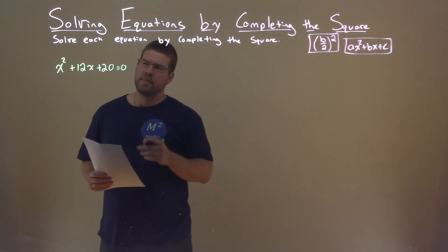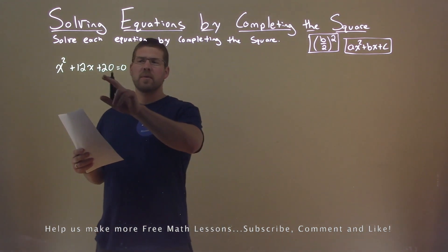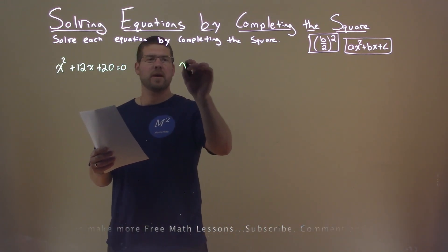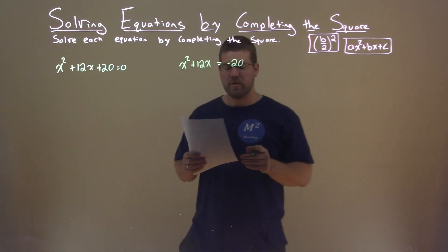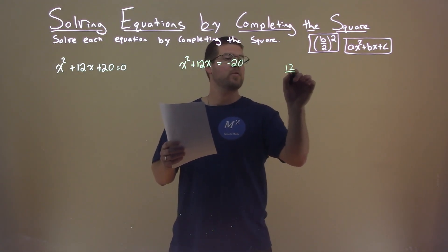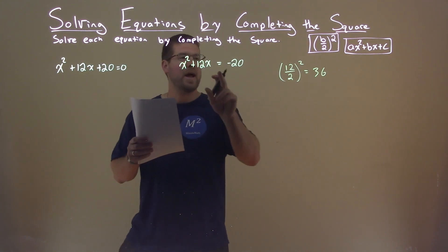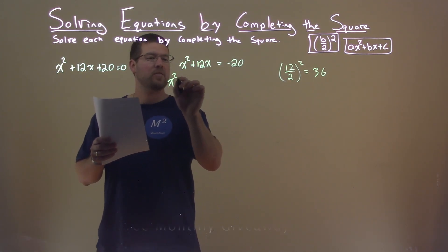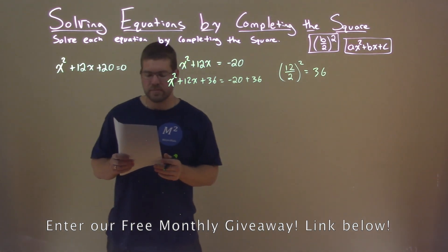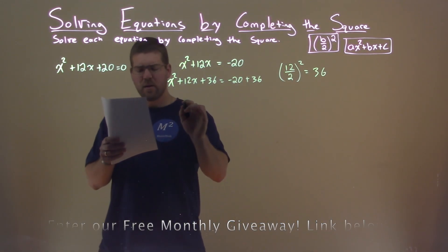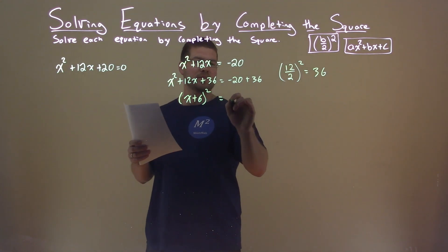We're given this problem right here: x squared plus 12x plus 20 equals 0, and we want to solve this by completing the square. First thing I'm going to do is subtract 20 from both sides, giving me x squared plus 12x equals negative 20. Now let's look at our B value, which is 12. We take 12, divide it by 2, and square it — that comes out to be 36. So we're going to add 36 to both sides: x squared plus 12x plus 36 equals negative 20 plus 36. The left-hand side is now a perfect square — x plus 6, squared — and negative 20 plus 36 is positive 16.